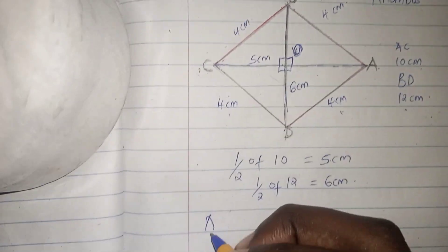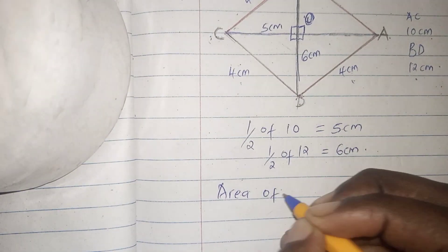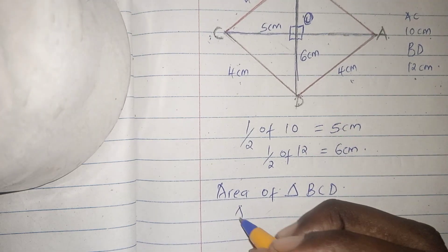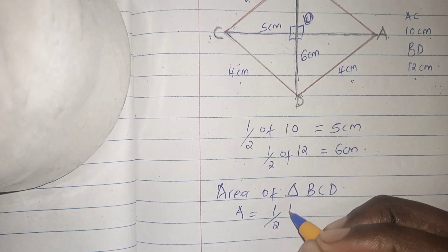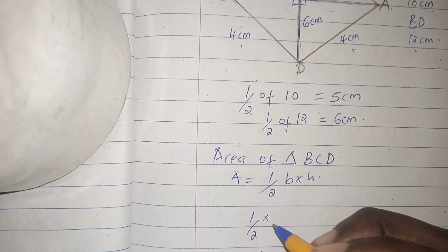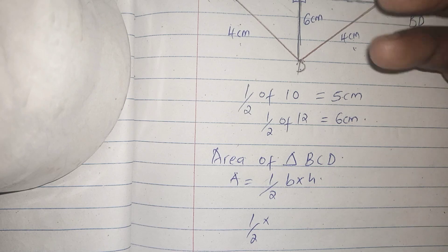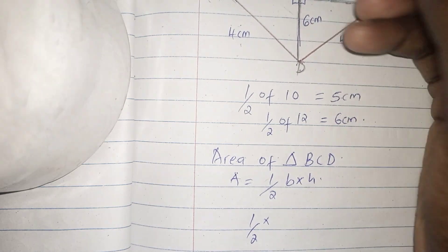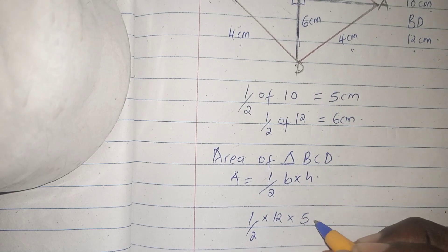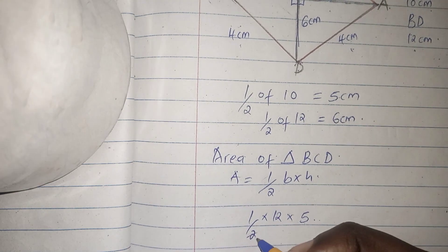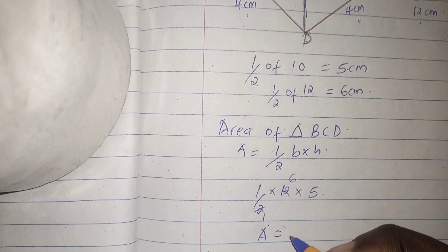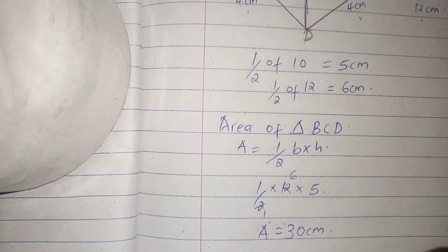Area of triangle BCD = ½ × base × height. The base BD = 6 + 6 = 12 cm, and the height CO = 5 cm. So the area = ½ × 12 × 5 = 30 cm².